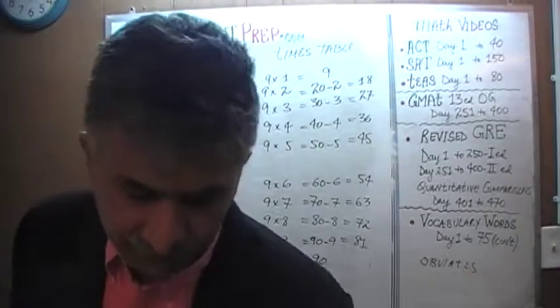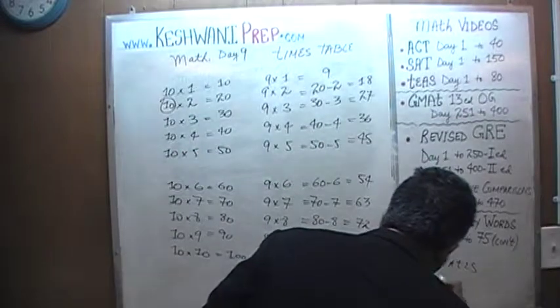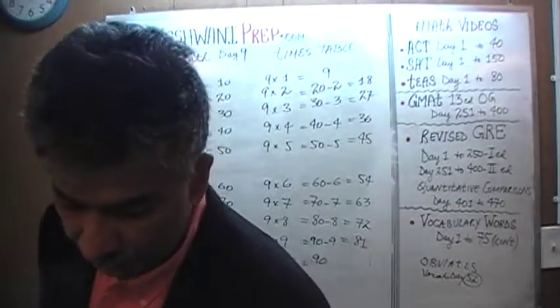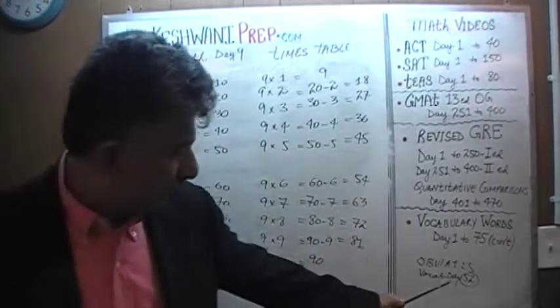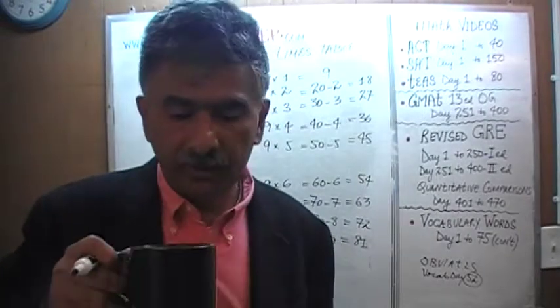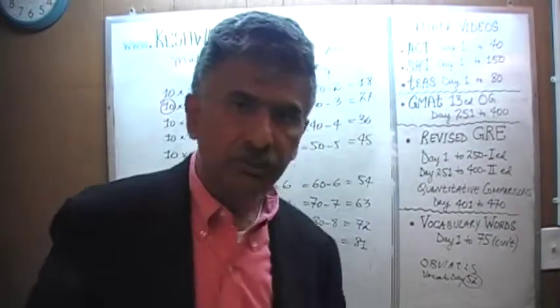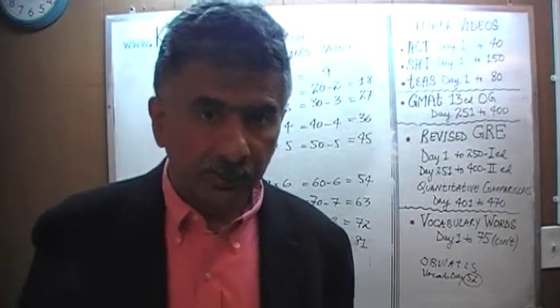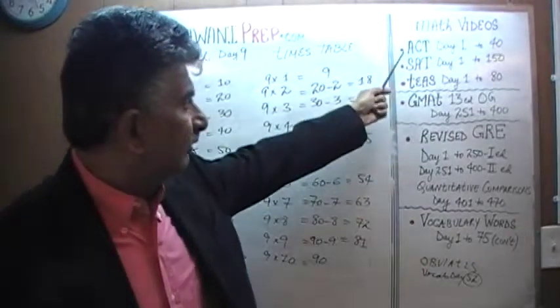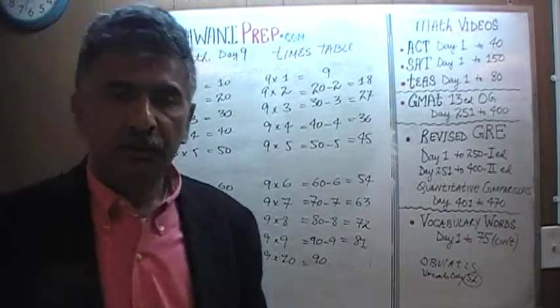When did we learn the word obviate in our vocabulary lessons? I am pretty sure we did. Day number fifty-two. Vocabulary, day fifty-two. If you are interested in improving your vocabulary, just type in vocabulary words. Just simply type in vocabulary words. Day fifty-two. And if you are looking for something and if you have trouble finding it, try putting in my name with it and it will pop right up.